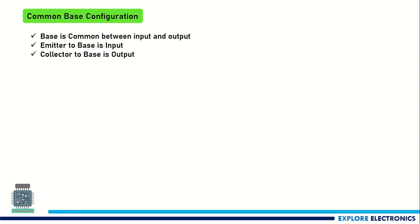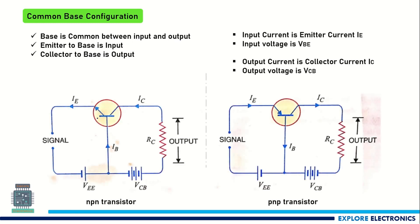In the common base configuration, as the name itself says, the base terminal is common between the input and output circuit. If you look at the circuit, this BJT is of type NPN transistor — this end is N, this end is also N, and this region is P, that is the base. The two N regions are emitter and collector. And if you look at the second circuit, this is again a BJT with PNP transistor.